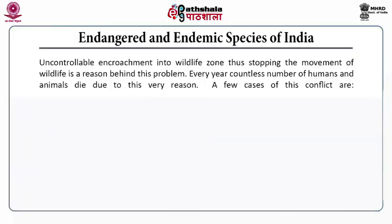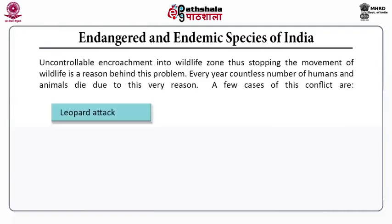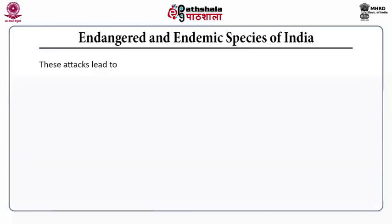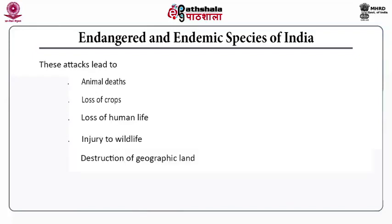Uncontrollable encroachment into the wildlife zone — stopping the movement of wildlife — is a reason behind the extinction of biodiversity. Every year, countless numbers of humans and animals die due to encroachment into the wildlife zone. Cases of this conflict include humans dying due to leopard, tiger, and elephant attacks, leading to animal deaths, loss of crops, loss of human life, wildlife injury, degradation of livestock, destruction of geographic land, and considerable reduction in wildlife population.